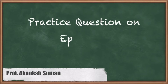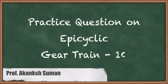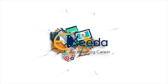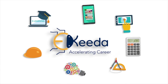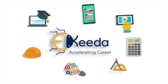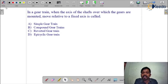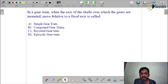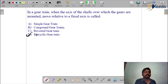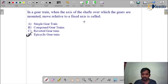Hello everyone, this is Akang Shuman. We will do questions based on the epicyclic gear train. In a gear train, when the axis of the shaft over which the gears are mounted moves relative to the fixed axis, we call it an epicyclic gear train. So the answer for this question is: epicyclic gear train.